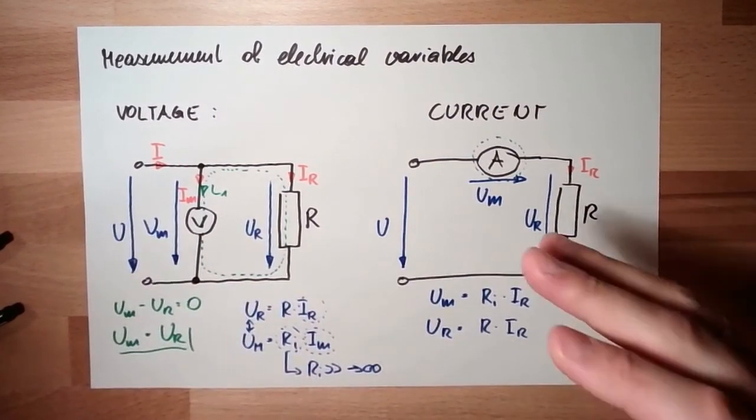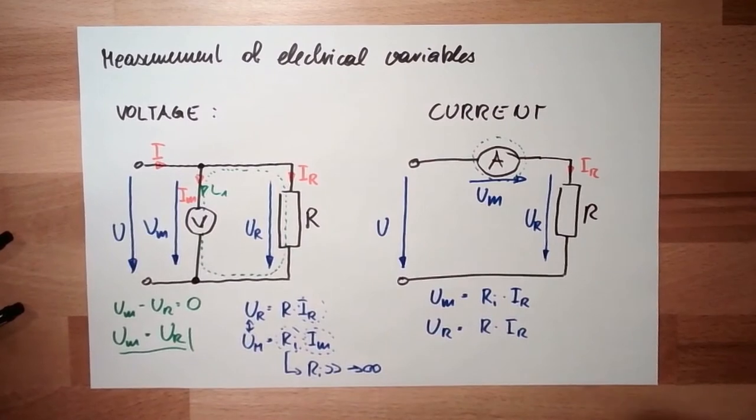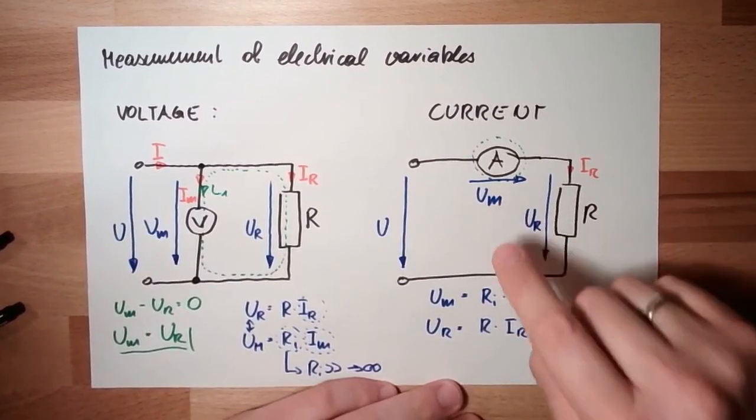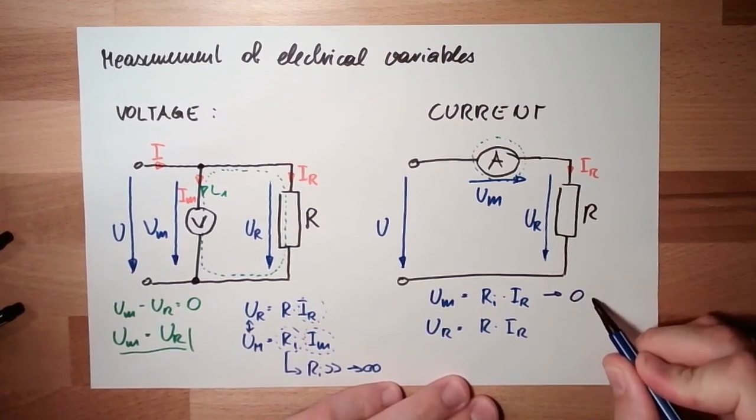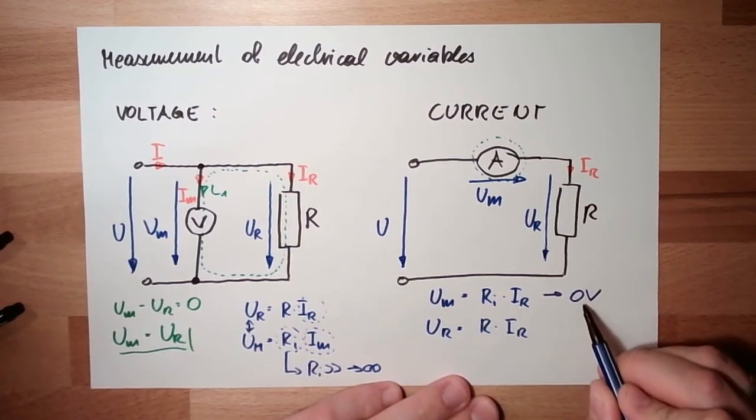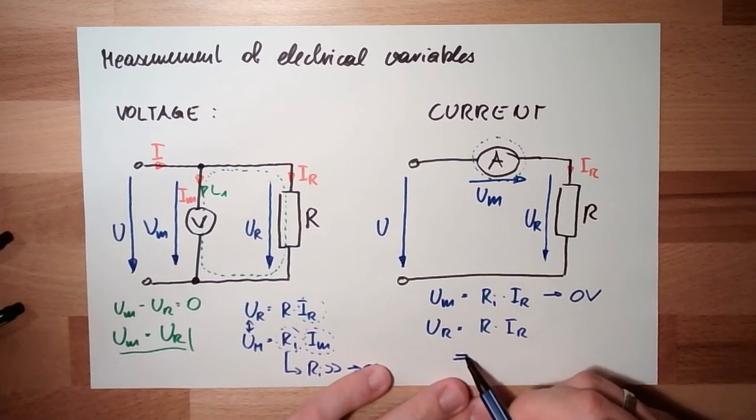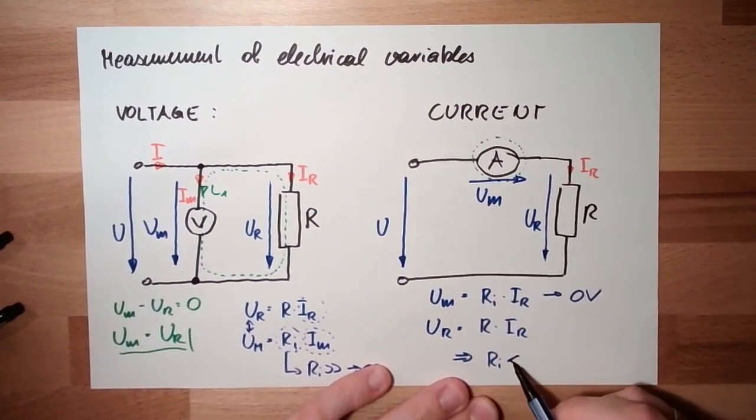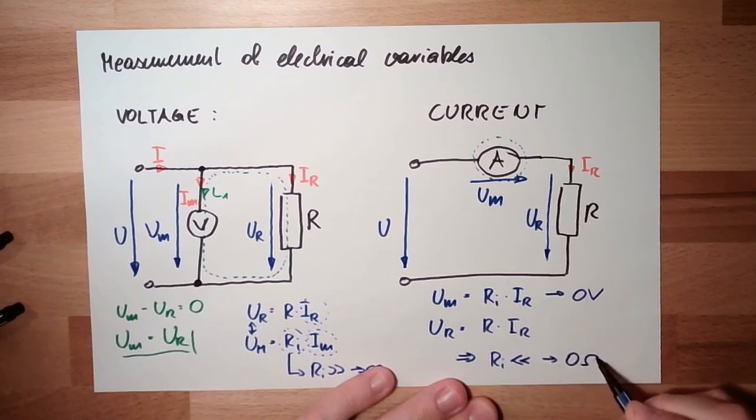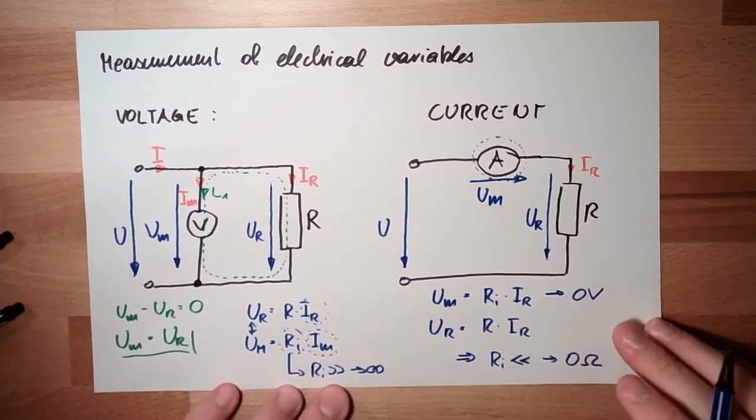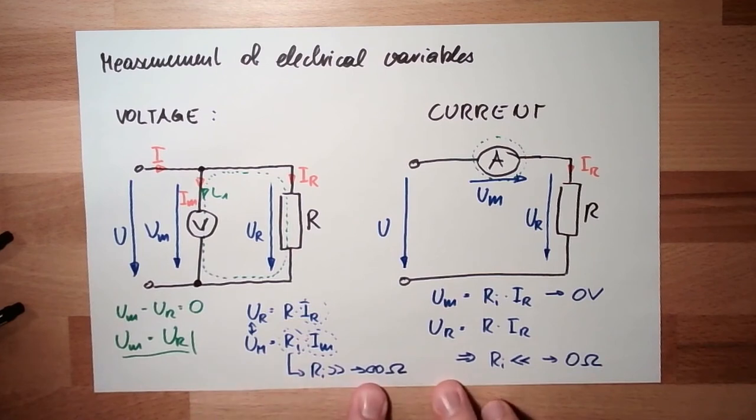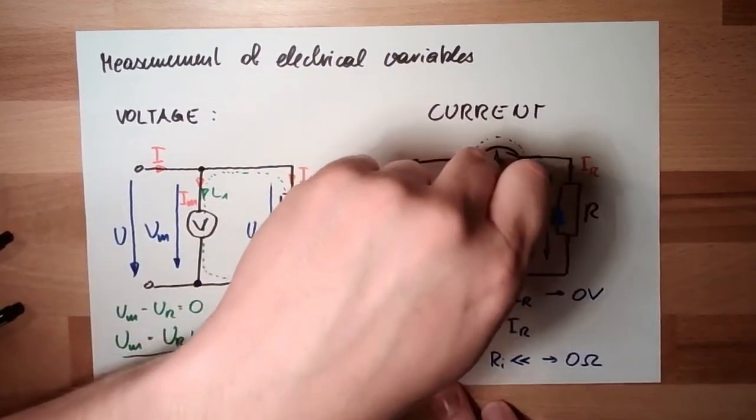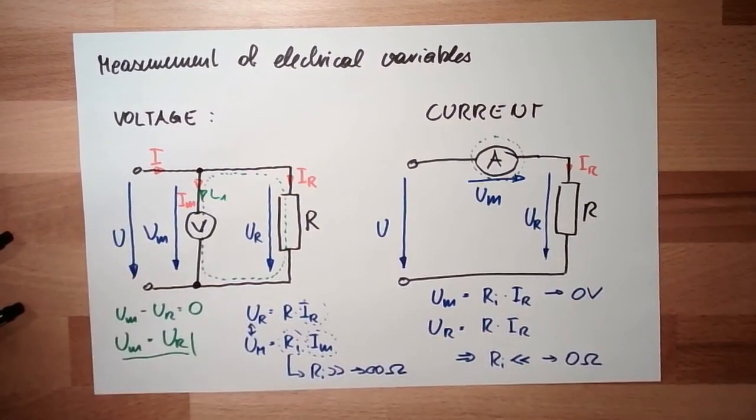To have this very low, this failure, I want this Um needs to go to zero. This would be nice, if it would be zero. So, Ri, the internal resistance of this ampere meter, must be very, very, very low. Ideally, zero ohms. Here, voltage measurement, infinity ohms, internal resistance. Current measurement, zero ohms.